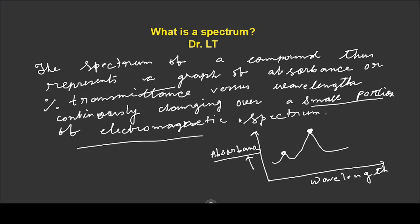The maximum absorption is at a particular wavelength called lambda max. The UV-visible spectrum is a graphical plotting of absorbance versus wavelength — or frequency, or wave number. This is a typical example of spectra from the electromagnetic spectrum.